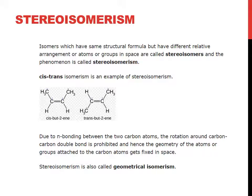Stereoisomerism is an important question from the back exercise. Isomers which have the same structural formula but have a different relative arrangement of atoms or groups in space are called stereoisomers, and the phenomenon is called stereoisomerism.